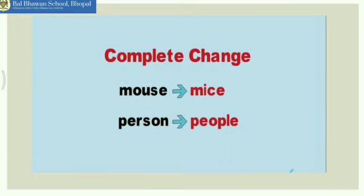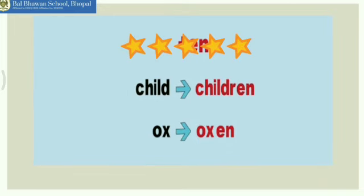Now children, there are some words where we add EN to make the plural. For example, child becomes children, and ox becomes oxen. So happy learning!